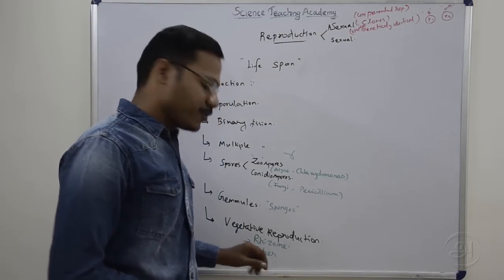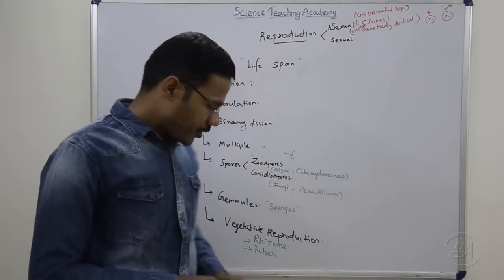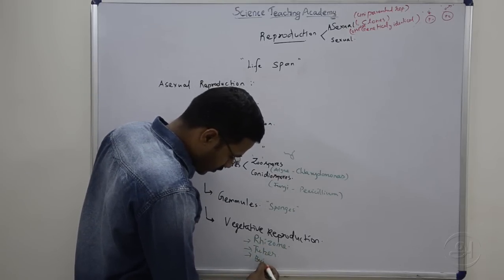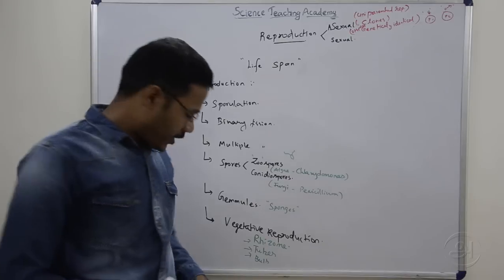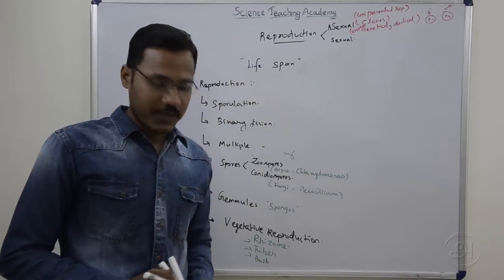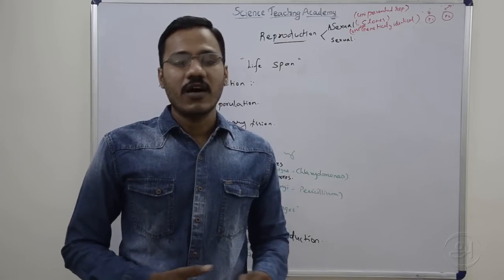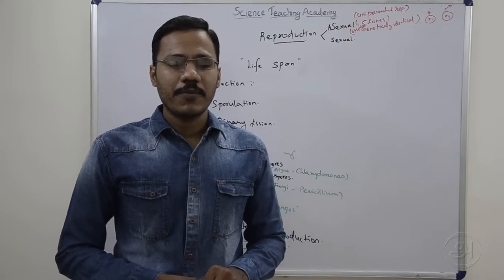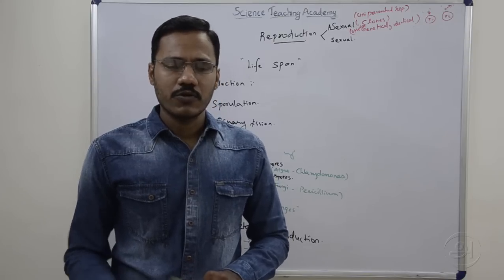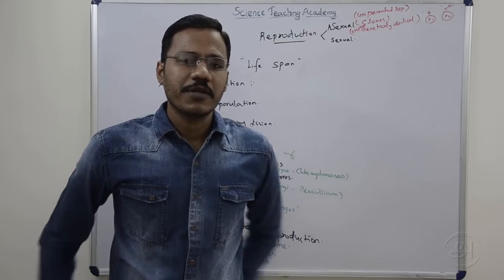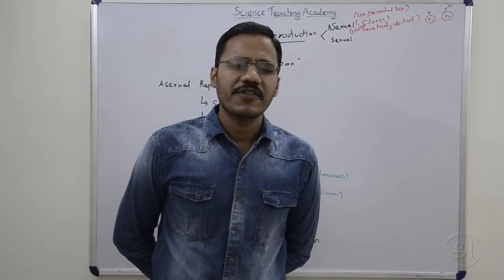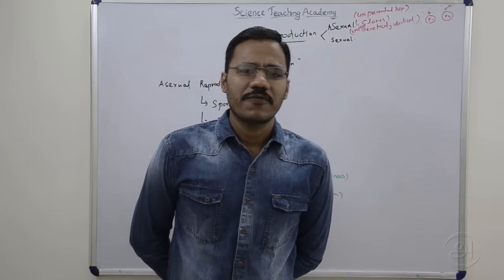Welcome to the Rhizome Tuber. In this video, we will show you the bulb. The bulb is a reproductive structure. Onions and garlic are examples. If you see a lot of vegetables, it will show you the bulb. The leaf will be modified for the food storage function.